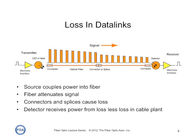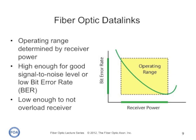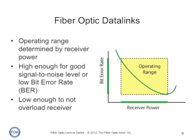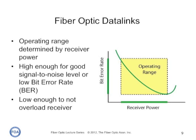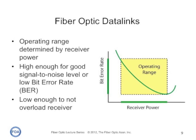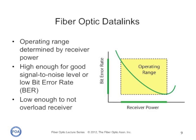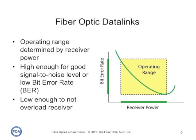A fiber optic data link works by transmitting from the transmitter to the receiver. The source in the transmitter couples a certain amount of optical power into the fiber, which is then diminished by the attenuation of the optical fiber and losses from connectors and splices in the link. Only so much of the transmitted power is received at the receiver, and it is the receiver power that determines the performance of the data link. If the power is too low, the signal-to-noise ratio will be bad and the bit error rate will be high.